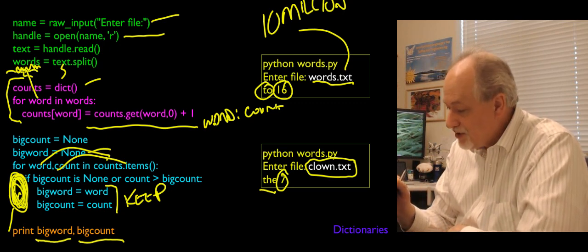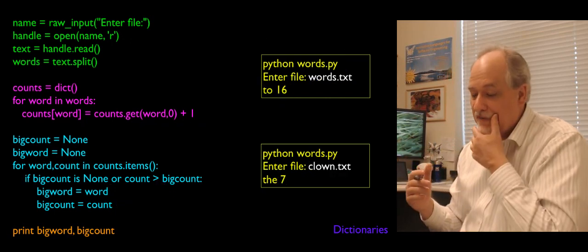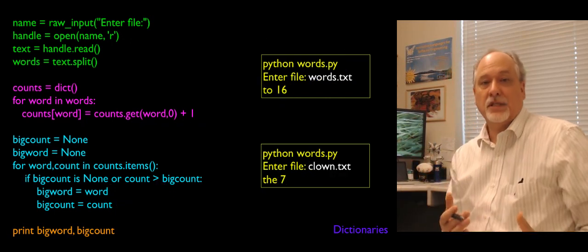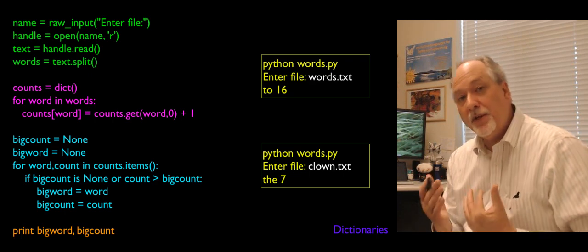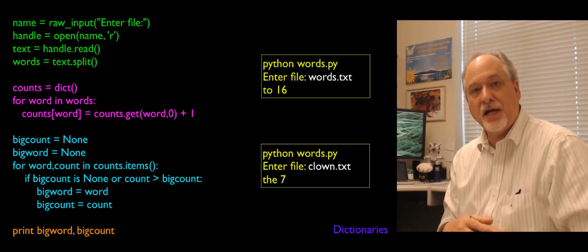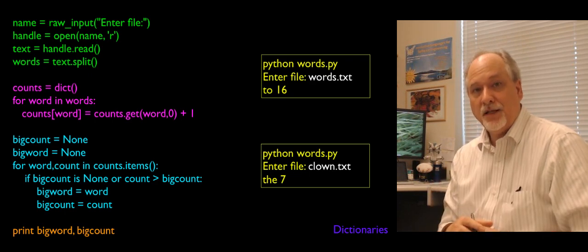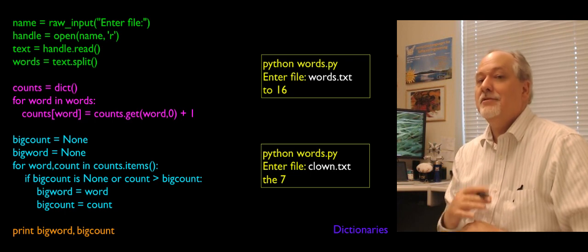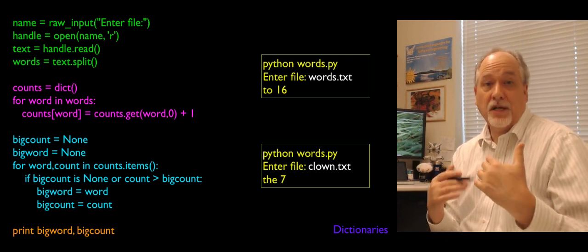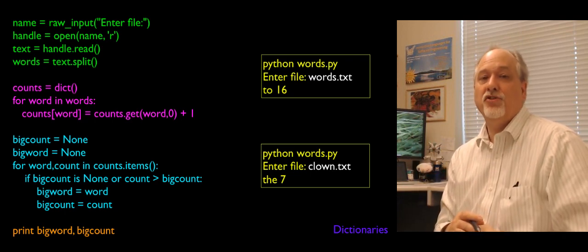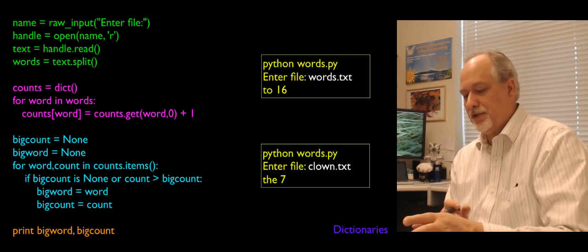When it comes out, it prints the most common word and how many times. If we feed in that clown text, it prints 'the is the most common word and it appeared seven times.' This uses a whole bunch of idioms — splitting of words, accumulation of multiple counters in a dictionary — and it could easily handle 10 million words.